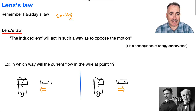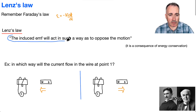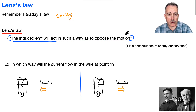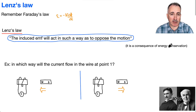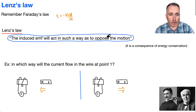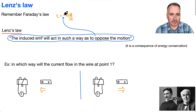So what's Lenz's Law? Lenz's Law says that the induced EMF will act in such a way as to oppose the motion. It turns out that's a consequence of energy conservation. It opposes the motion — that's essentially what the negative sign in this equation represents.